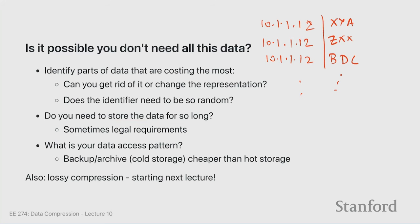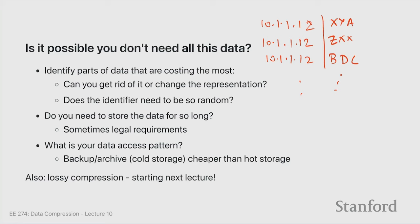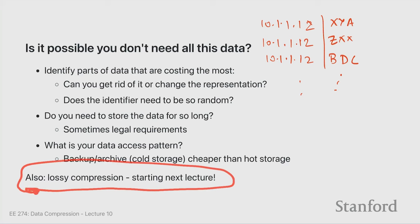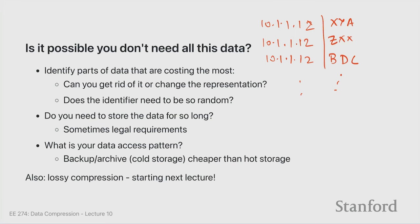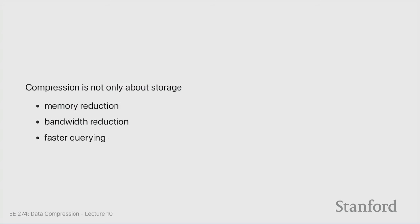Think about your data access pattern. Photos you want to keep but don't view daily — store them in cheaper cold storage rather than expensive hot storage, just like a computer cache keeps frequently accessed data in fast storage and less-used data on disk. Finally, for many types of data like video, lossless compression isn't practical — that's basically the next half of the course where lossy compression becomes essential.